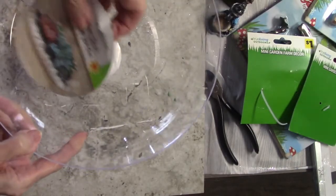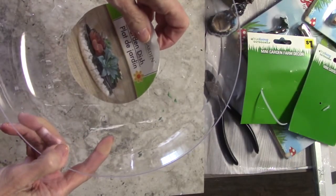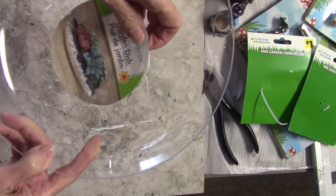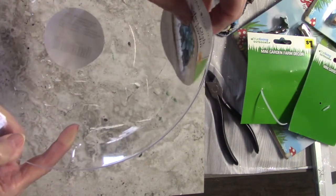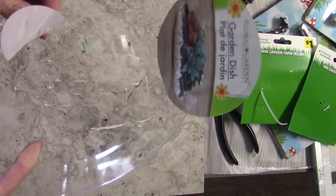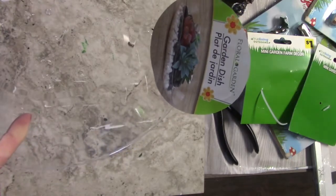I got this cute little garden dish at Dollar Tree. This is going to be so quick and easy and simple. And I do like these dishes. They're just really flat and they're clear, so you can do so much with them.